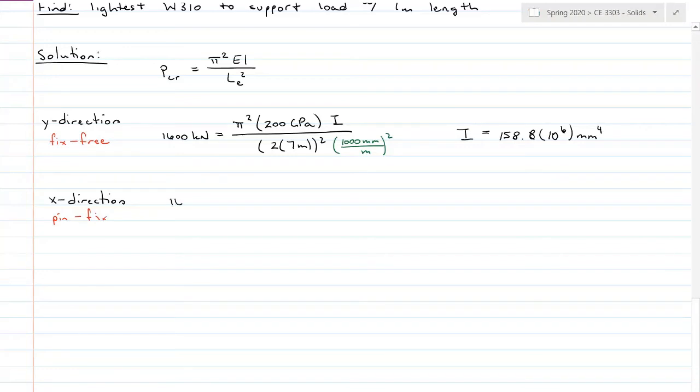And using the exact same P critical equation, 1600 kilonewtons is equal to π² times 200 gigapascals times inertia all over this time 0.7 times 7 meters squared. Doing the exact same conversion, 1000 millimeters per meter squared. We find that we require an inertia of 19.5 times 10⁶ millimeters to the fourth.